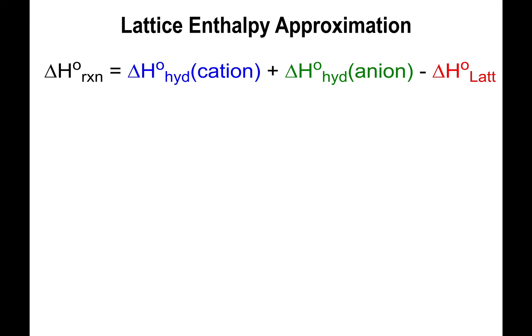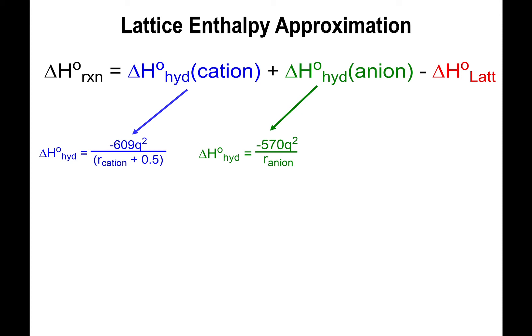The enthalpies of hydration themselves have approximation formulas. The enthalpy of hydration of the cation can be approximated as negative 609 times the charge squared, divided by the ionic radius of the cation plus 0.5. For anions, the formula is similar: negative 570 times the charge squared, divided by the radius of the anion. These formulas do a relatively good job of approximating the delta H of hydration for cations and anions respectively.